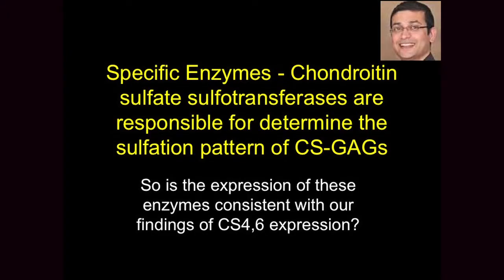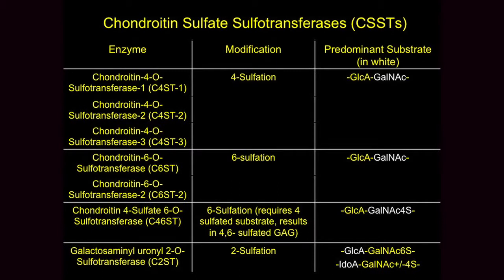We published a paper showing that both the length and number of processes is affected just by the presence of this dual-sulfated sugar — no protein core, nothing else. Then we said we want to modulate these sugar expressions. There is a whole family of enzymes — chondroitin sulfose-sulfotransferases — that put sugars on specific locations. They put on the six-sulfated sugar, the four-sulfated sugar, and then the six-sulfated sugar that acts on the four-sulfated to make the 4,6-sulfated sugar.